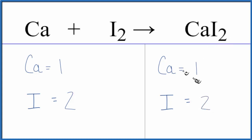So if you look at the atoms on both sides, the numbers of them, this equation's already balanced. The reason we get this CaI2 is because calcium, when it bonds, forms two plus ions.